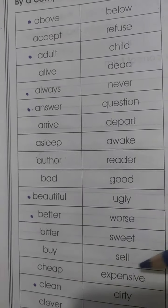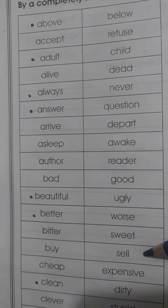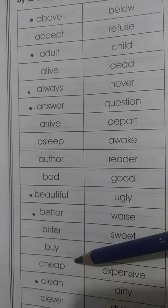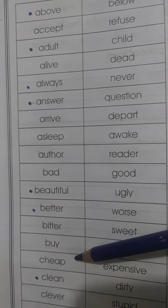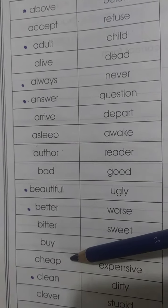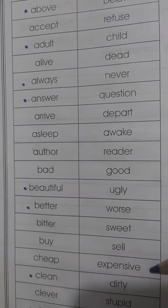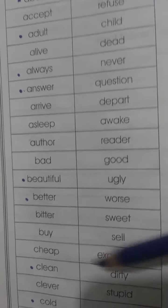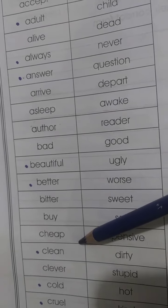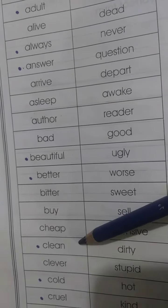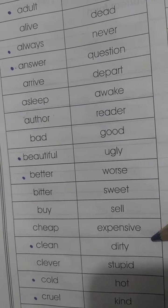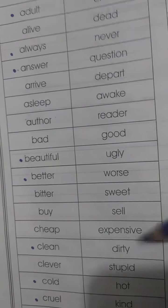'Buy' — haridna, meaning to buy. Antonym is 'sell' — bêchna, meaning to sell. 'Cheap' — yianni sasta, meaning inexpensive. Antonym is 'expensive' — mehenga. 'Clean' — saaf karna. Antonym is 'dirty' — ganda.